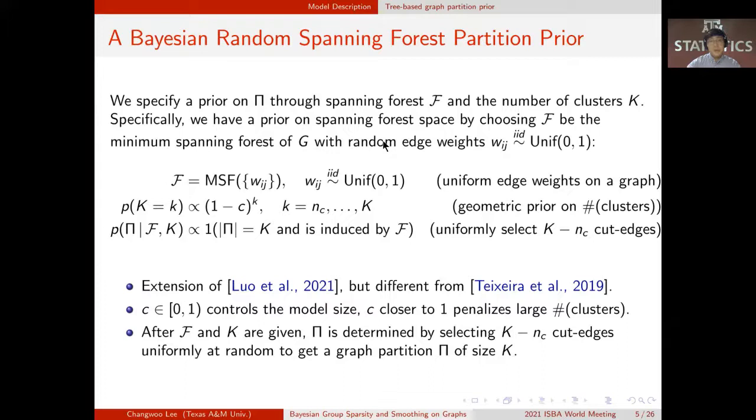Here K is assumed to have a geometric prior with parameter c. Finally, the partition pi is determined by selecting K minus nc cut edges uniformly at random, where nc is the number of connected components in the graph. The parameter c controls the model size. When c is closer to one, then it's penalized the model with large number of clusters.